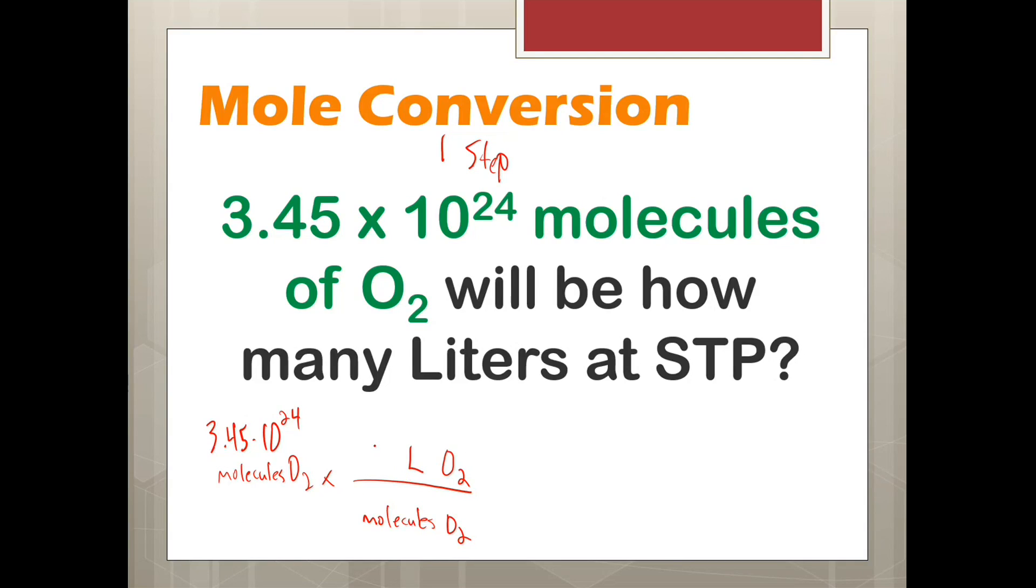If we do this in one step, the liters gets the 22.4 in front of it because it's at STP, and the molecules get 6.02 times 10 to the 23rd power. We need to put that in parentheses so our calculator doesn't get angry at us. And when you do this, you will get the answer of 128 liters of O2.